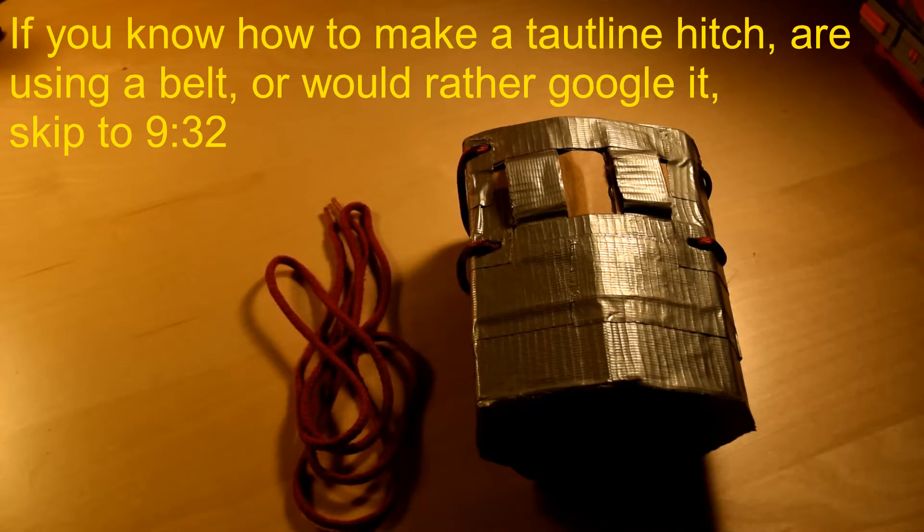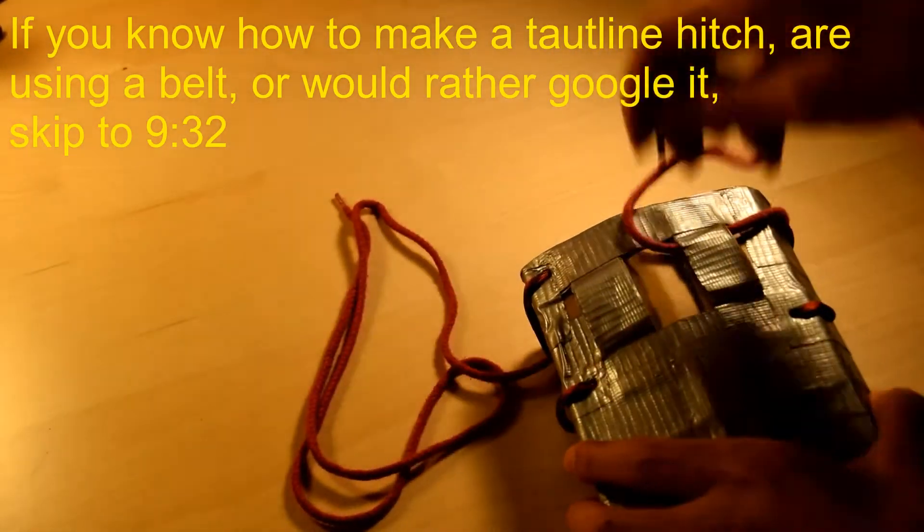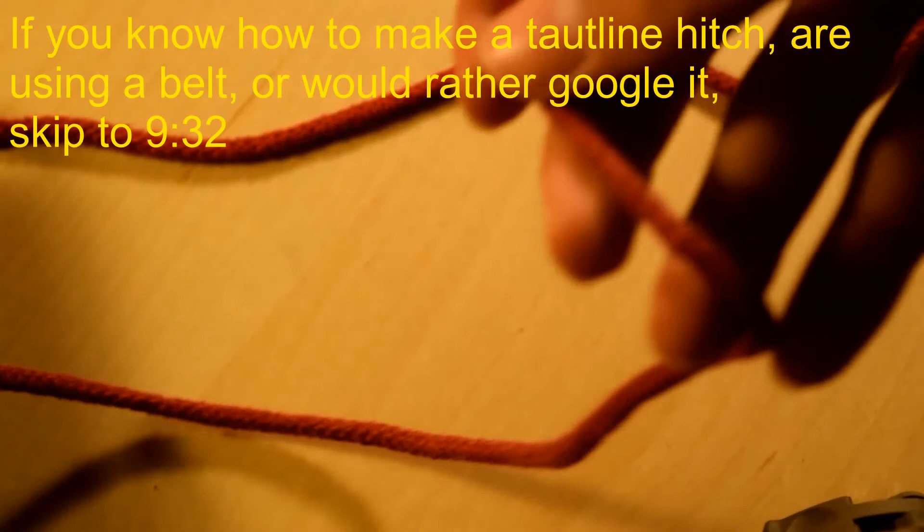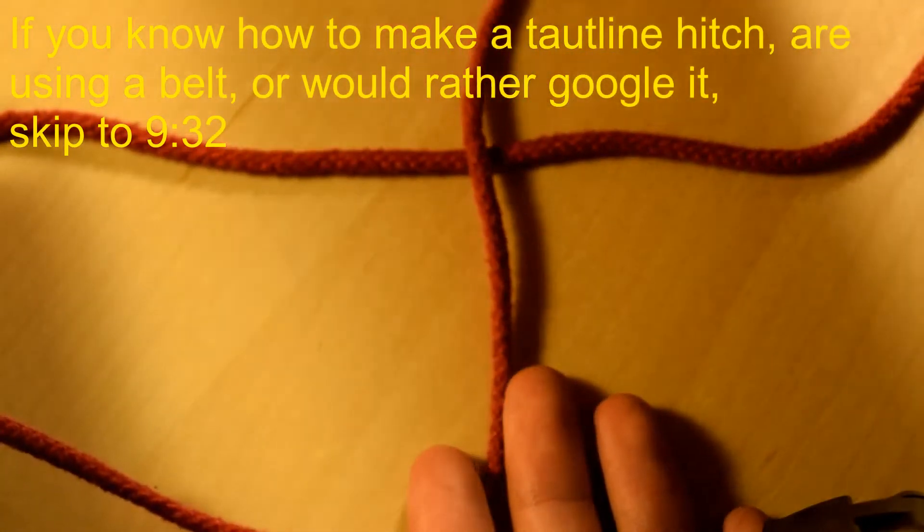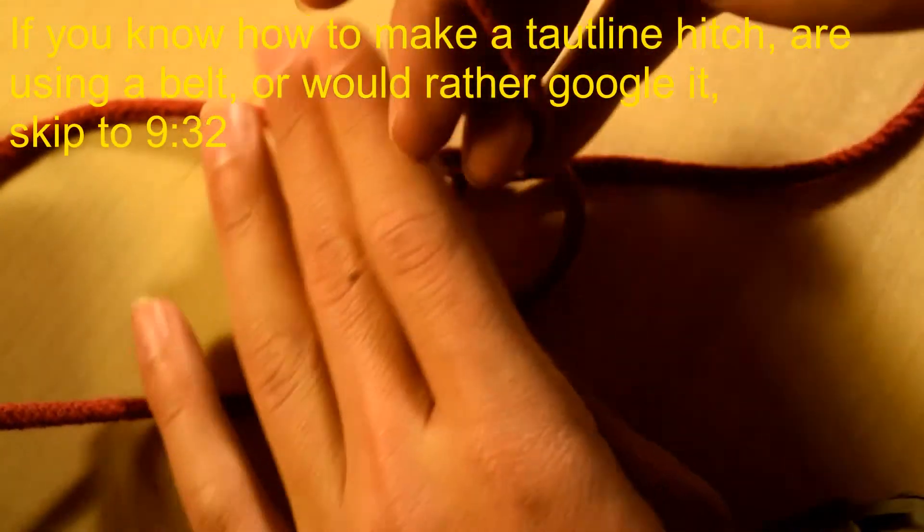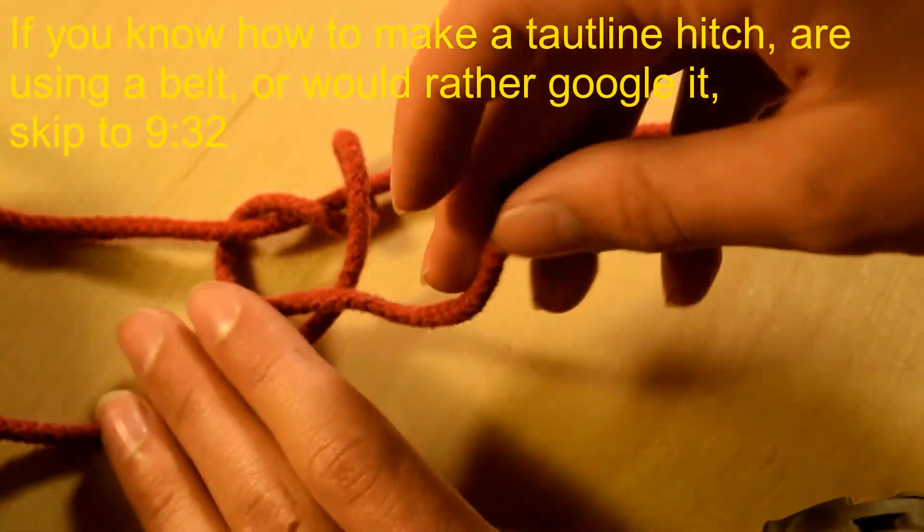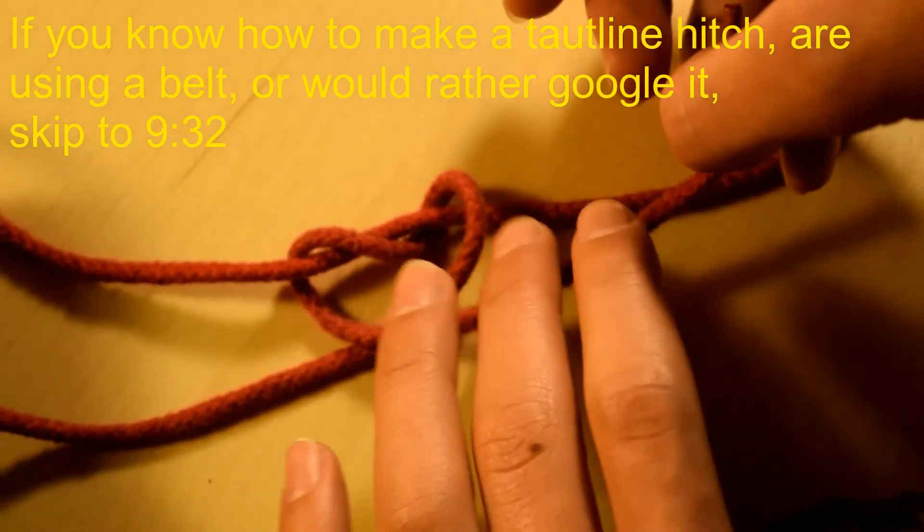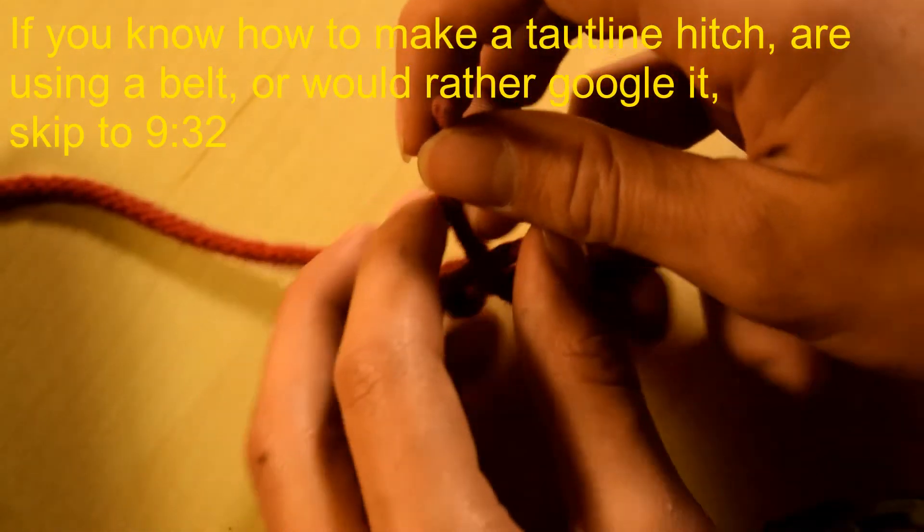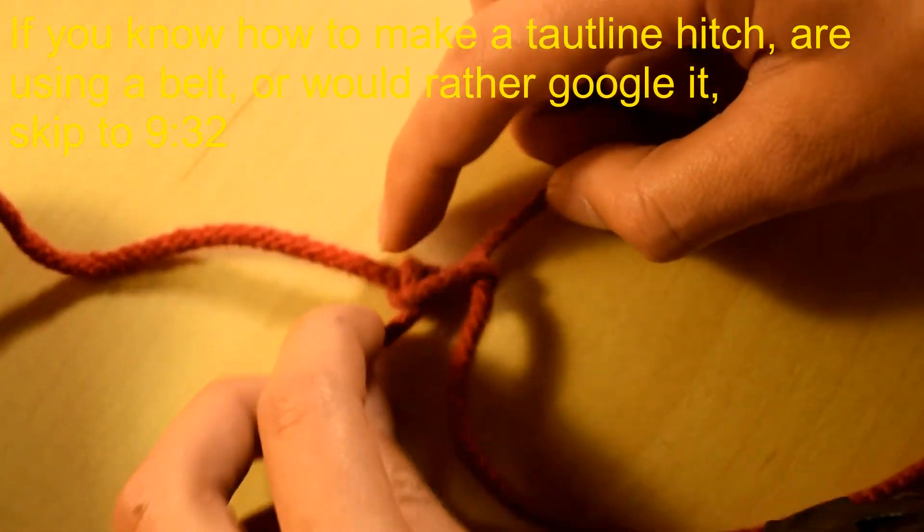Making a leg holster using a piece of shoelace relies on one fundamental knot, the taut line hitch. Take one end of your shoelace and run it through these two loops. Then cross it over the other end of your string. We're going to loop it under and over two times. Under and over once and then under and over twice. Then on this other end of the string we're going to run it over, under, around the top, and through this little loop we made. Now tighten it up to the best of your ability. And now you have yourself a taut line hitch.